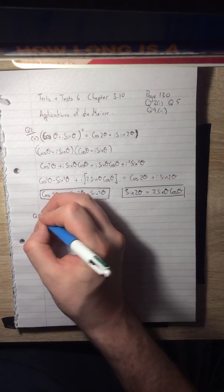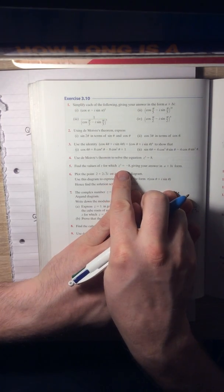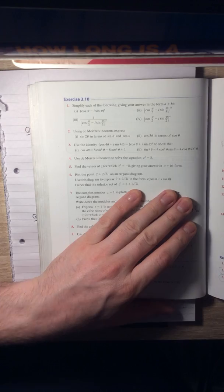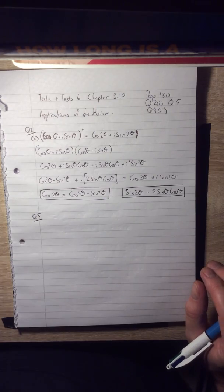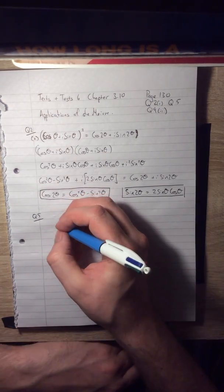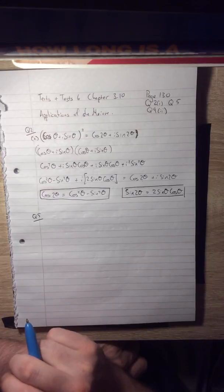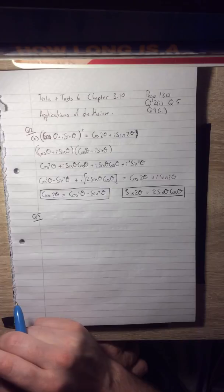And question five asks to define the values of z for which z³ equals -8, giving your answer in rectangular or Cartesian form. This is a really common type of question, and it's one you need to be able to do. It depends on being able to use a thing called the general polar form.